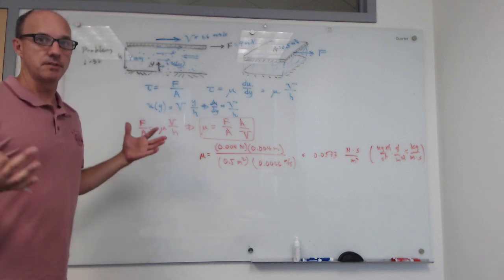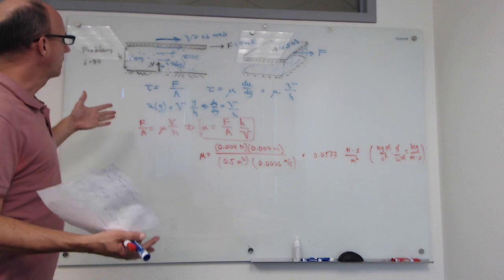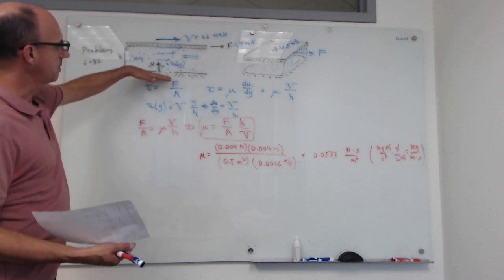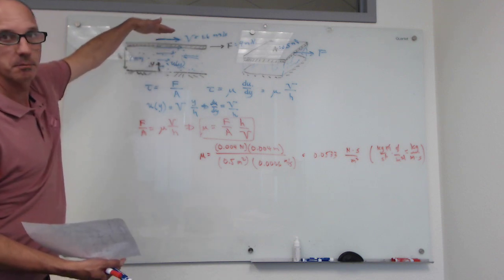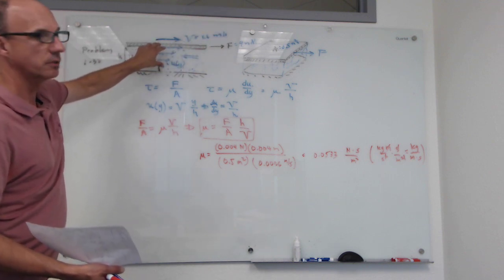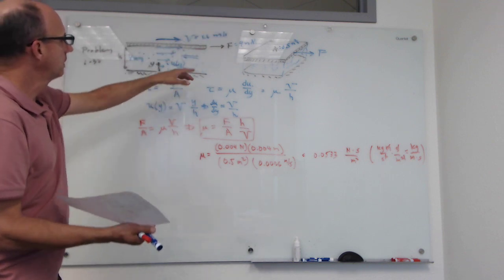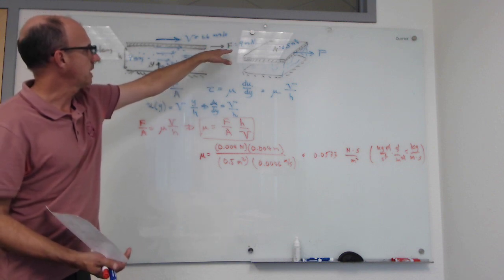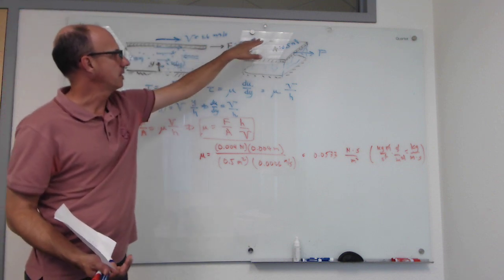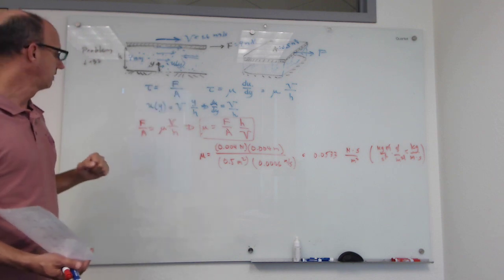This is the simplest shear-type problem you can possibly imagine: one plate on the bottom not moving, another plate on top moving to the right, with liquid in between the two plates being sheared. The force required to pull that top plate to the right is related to the shear stress and to the area through the expressions we've worked out.